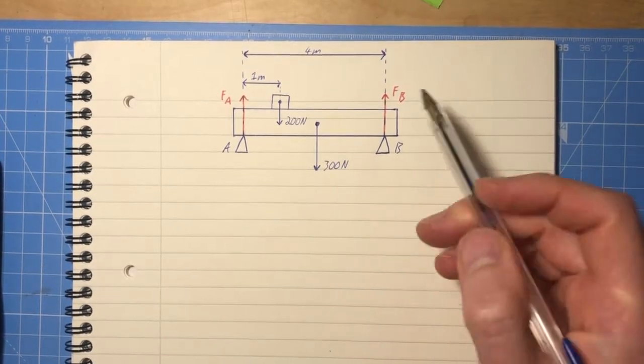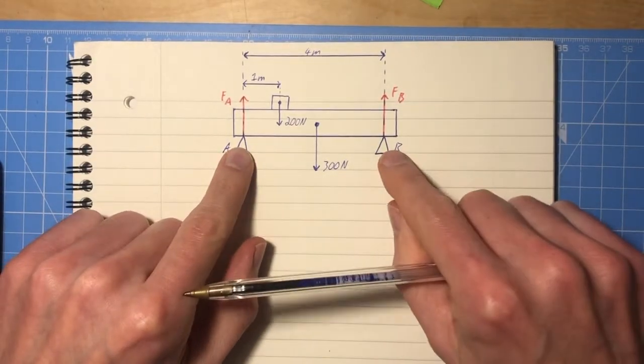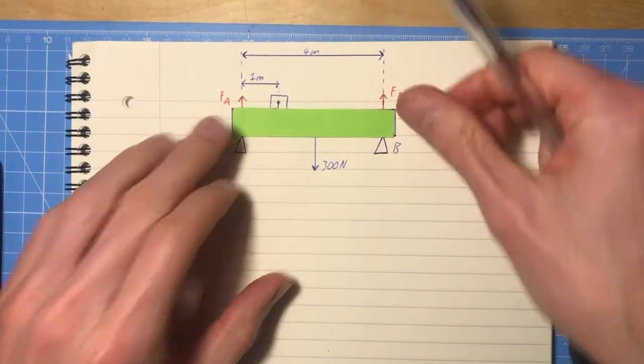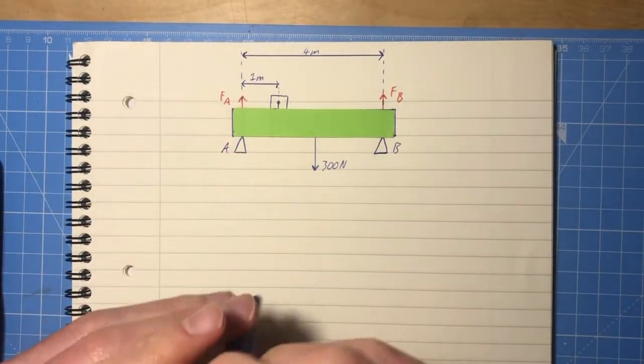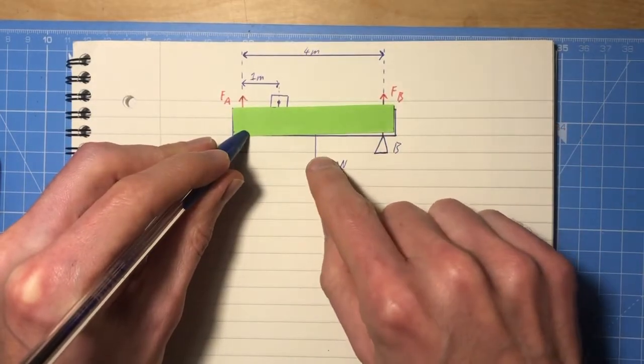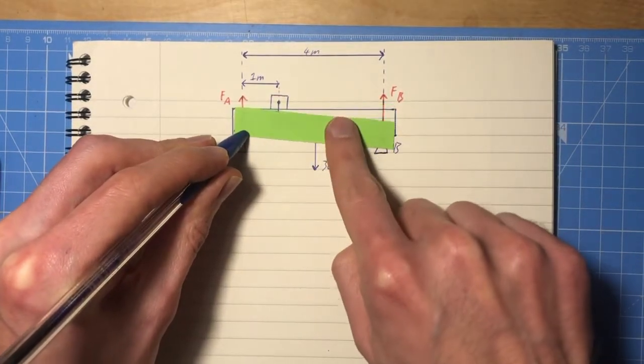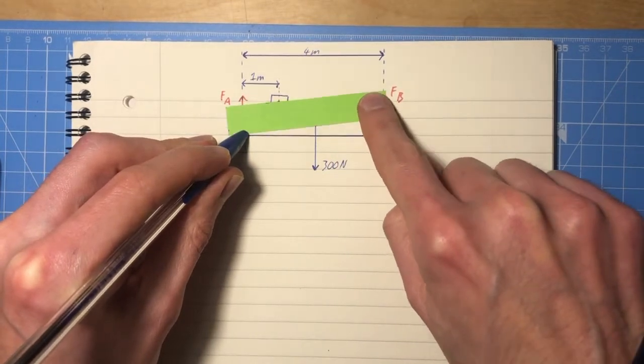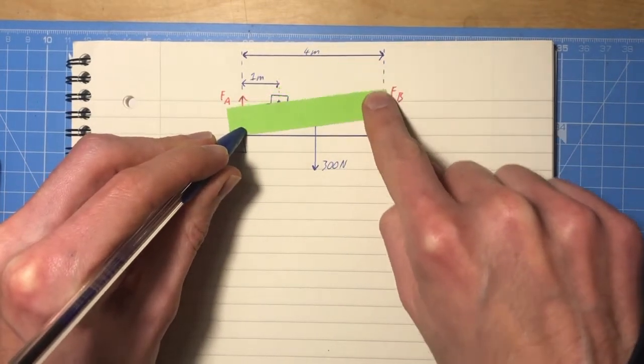The way we do this is by taking moments about A and B. So the way to visualize that is when we take moments about A, we imagine that A is the pivot, and these forces, this one and the one from the mass, are causing it to rotate this way, and force B, FB, is causing it to rotate this way, it's pushing it up.